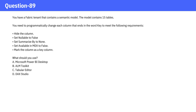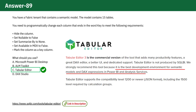The correct answer is C, Tabular Editor, because Tabular Editor is a powerful tool designed for managing and modifying Power BI and Analysis Services models. It allows you to programmatically apply changes to multiple columns, such as hiding them, setting properties like Nullable, Summarize By, available in MDX, and marking columns as key columns. You can write a C# script or use advanced object-level actions within Tabular Editor to apply these settings across all relevant columns in your model efficiently.